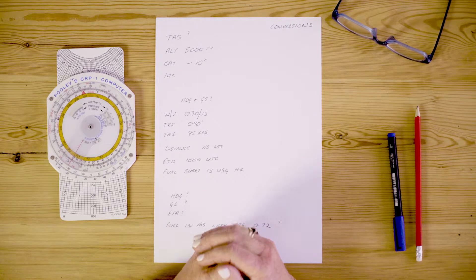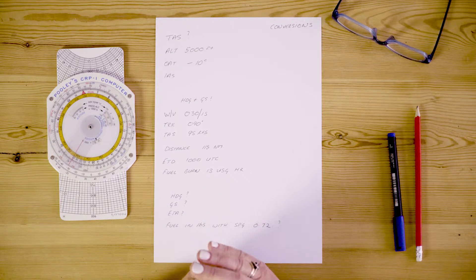Nobody likes the theory part. I noticed that students are really struggling with their CRP1 flight computers or the CRP5, so today I'm going to take you through a complete flight plan. I'll do it nice and slowly. We'll be using all the parts of our computer and we'll go from a flight plan right from the beginning to the end.